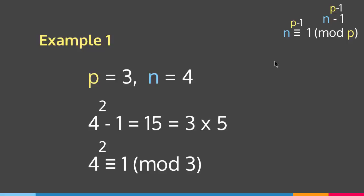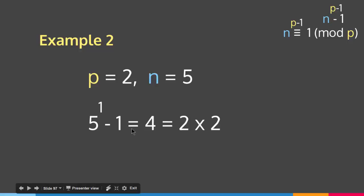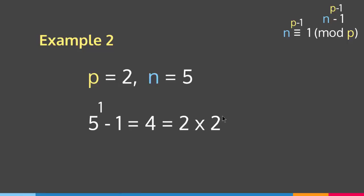Let me give another example. Suppose p = 2 and n = 5. Since 2 does not divide 5, n to the p minus 1 minus 1 has to be a multiple of 2. So 5 to the 1 minus 1 equals 4, and 4 is a multiple of 2 because 2 × 2 = 4. For the congruence form, 5 to the 1 is congruent to 1 mod 2, which is indeed true.